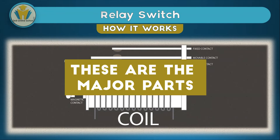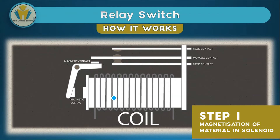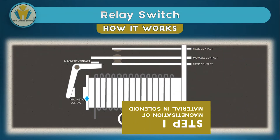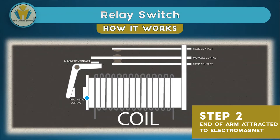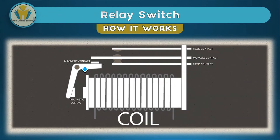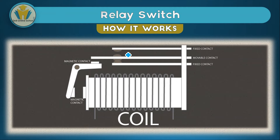Now, how does this relay switch work? The core causes magnetization of the magnetic material inside the solenoid — the scientific name for the core — causing this magnetic contact to become magnetized. Since we have two magnetic contacts, the unmagnetized one is attracted to the magnetized one. Therefore, this arm moves and pushes the movable contact towards the other fixed contact that was not part of the original circuit. The electric current will stop passing through the first circuit and start passing through the other circuit. This is how a relay switch works on the principle of magnetism.